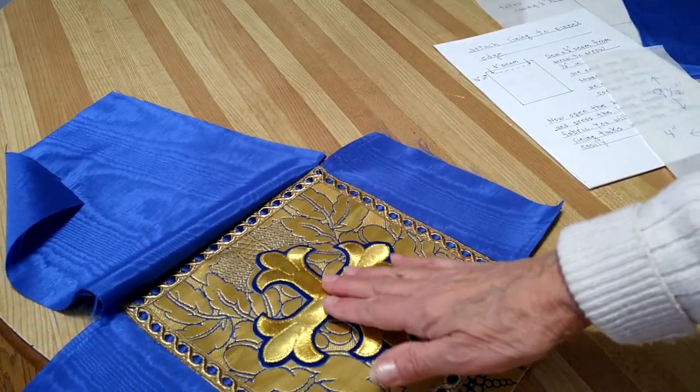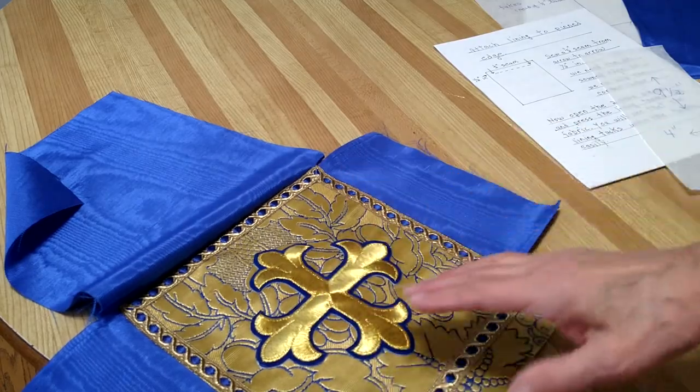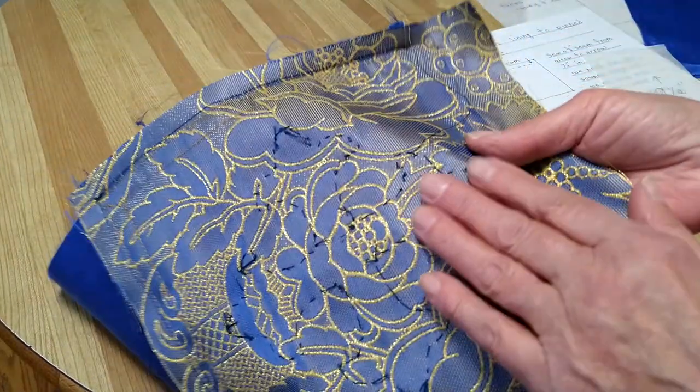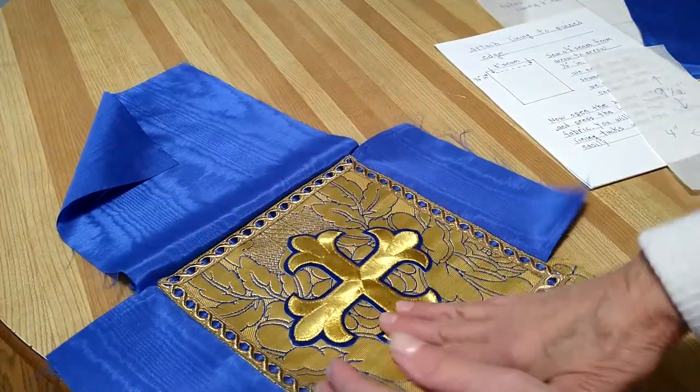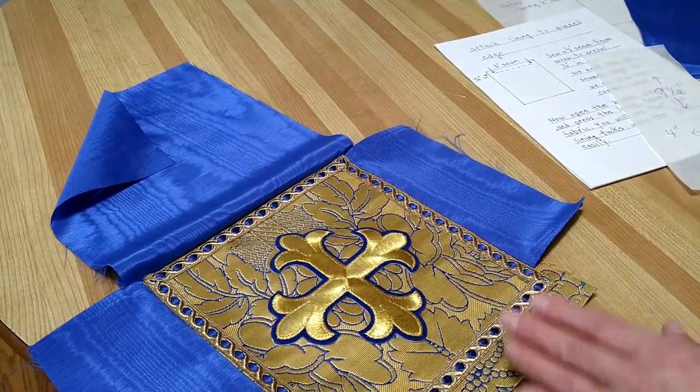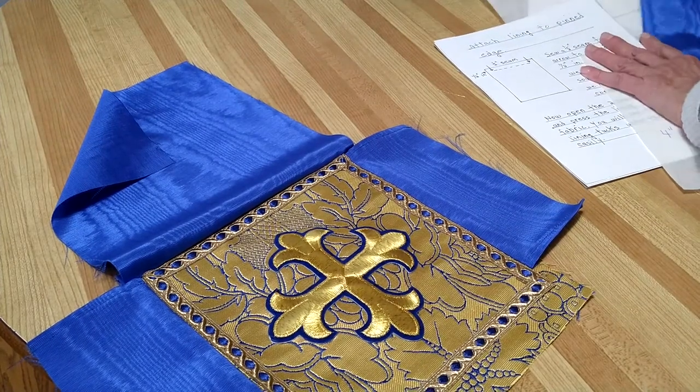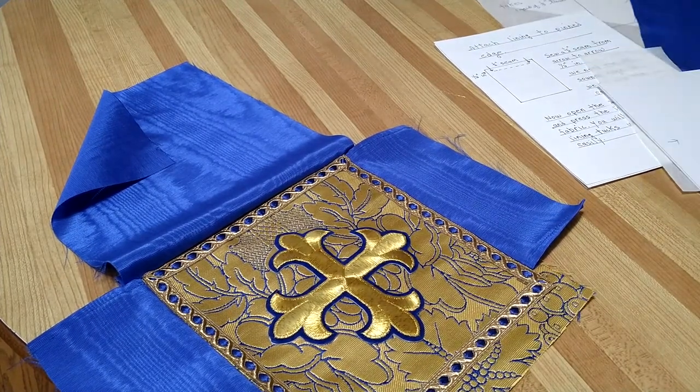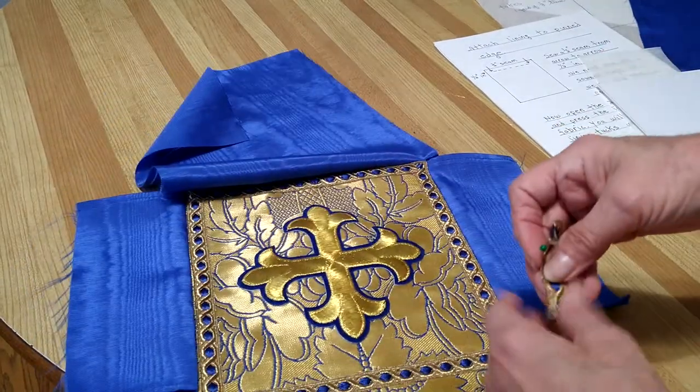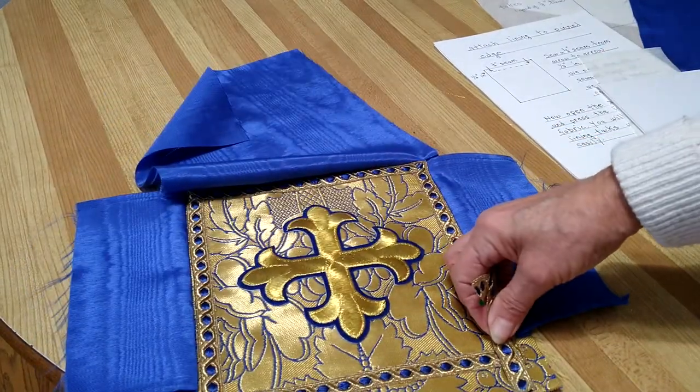So you have the cross centered that's already sewn on. I did not put a backing on here because this fabric is pretty heavy. Now how am I going to know where to end here.